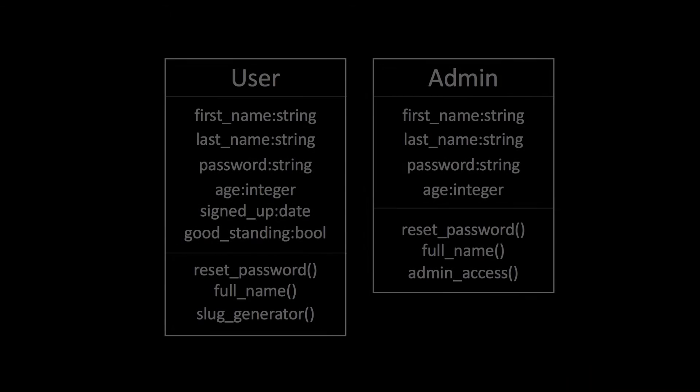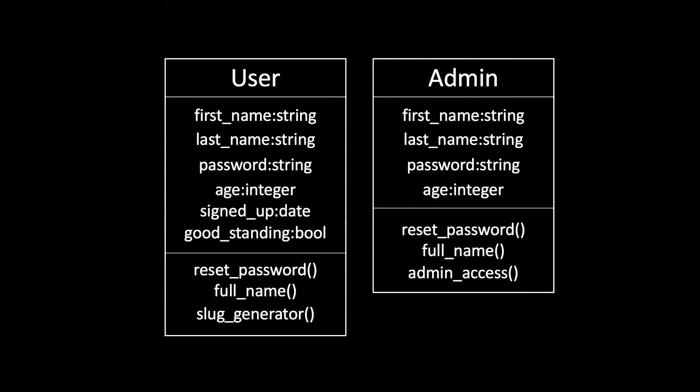Let's imagine that you're building a social networking application. In the app, you have two types of users: standard users and admin users. If you were to create a database table for both user types, it would look something like this. This would be a really poor way to build an application. As you can see, the attributes and methods are very similar, which means that each time you make a change to the users, you'll most likely need to make changes to both database tables.